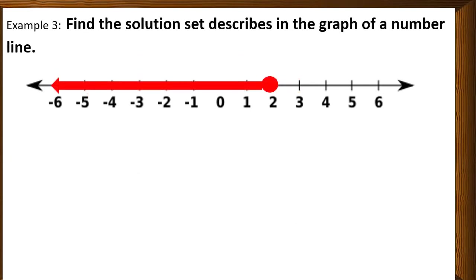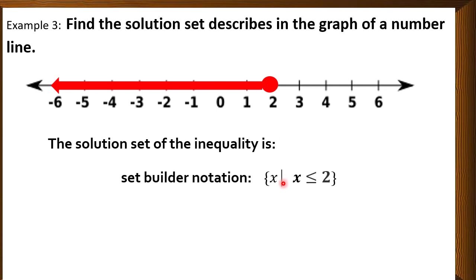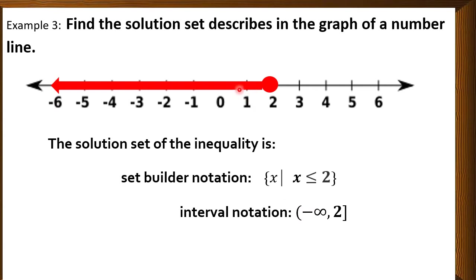Another example. This is a graph where we have a solid circle going to the negative infinity. Remember, a solid circle means we use either greater than or equal to or less than or equal to. For the set builder notation, the solution going to the left is less than or equal to 2, so we have the set of all x such that x is less than or equal to 2. For the interval notation, we have negative infinity with parenthesis, and then a bracket at 2, because 2 is part of the solution — meaning 2 is included — so we use a bracket.